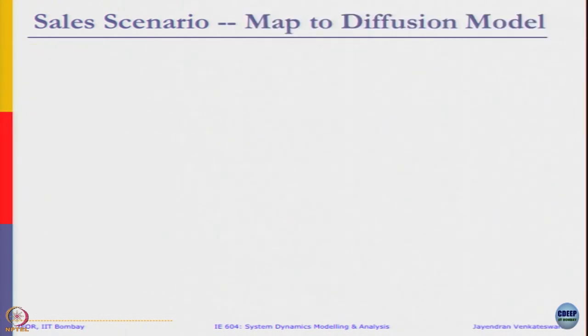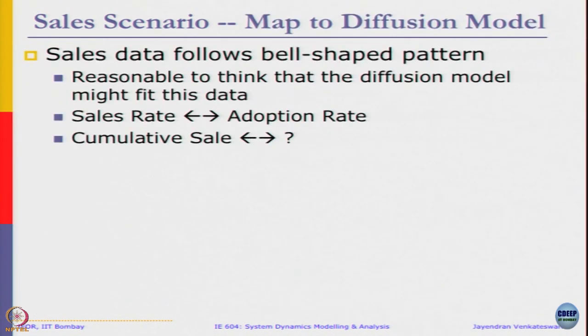The first is to map it. Let us just make the observations. Sales data follows a bell-shaped pattern. In that case, it is reasonable to think that the diffusion model might fit this data. What we have is sales rate, it is nothing but the adoption rate, that is obvious. What will be the cumulative sales? We are going to map it to the diffusion model. The diffusion model we have seen the terms adoption rate. In our example that is the sales rate. What will be the cumulative sales in a diffusion model?